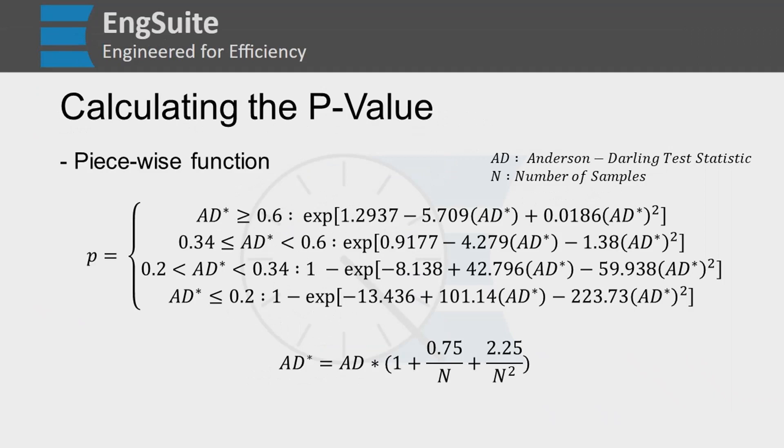So once we have our Anderson-Darling test statistic, we can use that to calculate the p-value. We can take our piecewise function, where p equals each of these lines is a different function based on what the AD star value is.